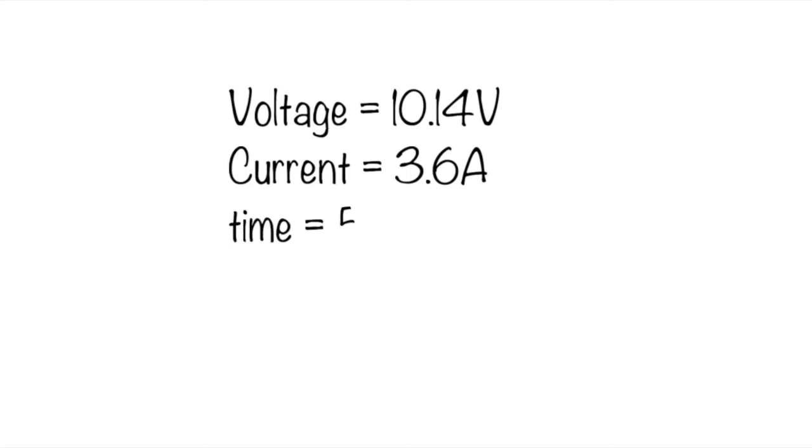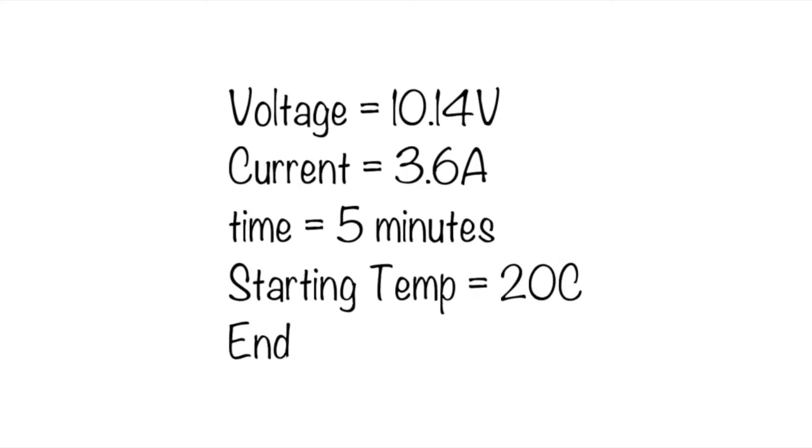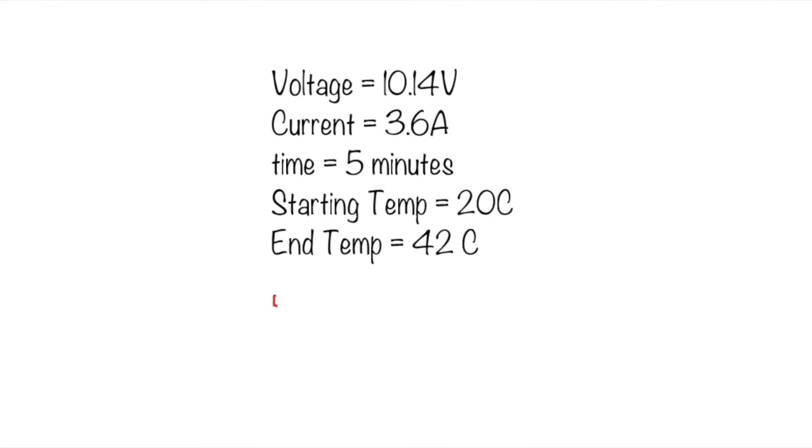How to calculate the specific heat capacity? Well, during the experiment you should have made note of the voltage supplied, which should stay steady at 10.14V, the current was 3.6 amps, the time was five minutes, the starting temperature was 20 degrees Celsius, and the end temperature should be 42 degrees Celsius.